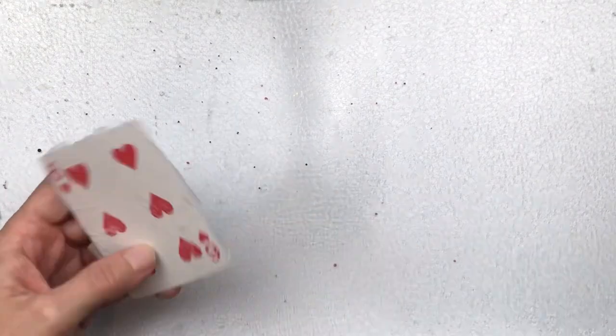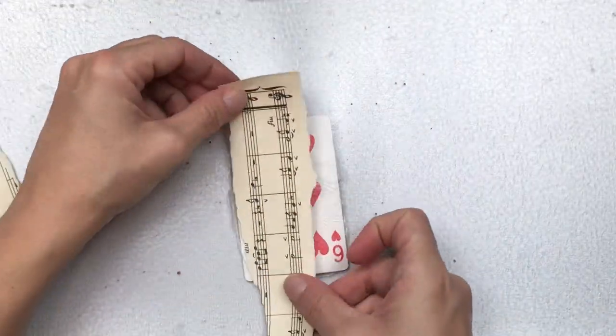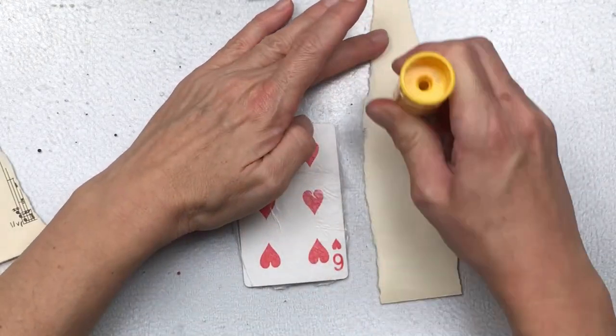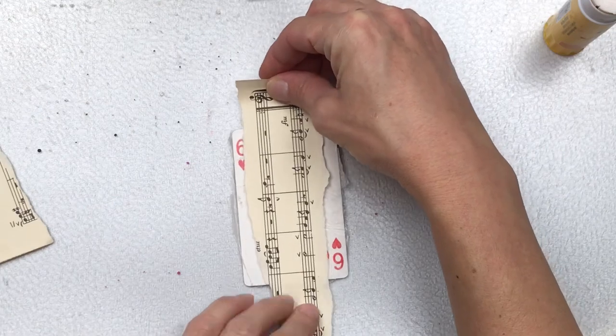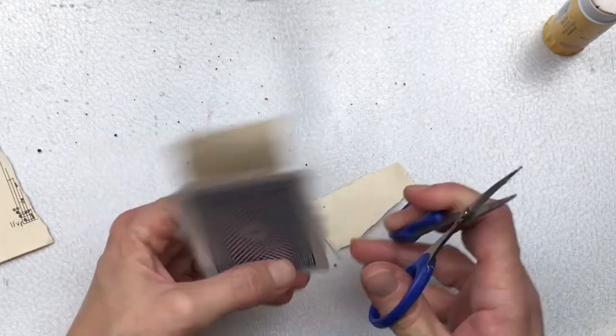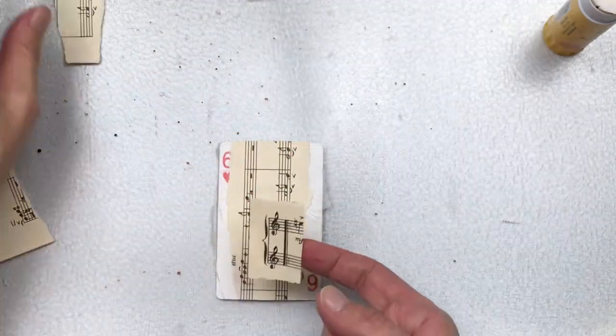I'm now going to add a few pieces of my sheet music, just like collaging. Just tear a few pieces and stick them down randomly. I'm using a glue stick for this part. Trim off the excess with scissors or you could tear it off if you prefer.